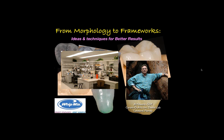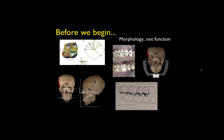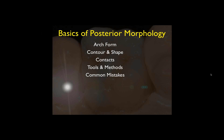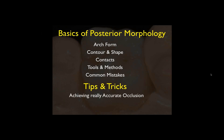Before I get going, I'd like to mention that we're talking about morphology, not necessarily function. While these are inevitably intertwined, today we're going to focus only on what I believe to be the most important concepts of posterior morphology and how to approach doing it from where I see it. We're going to look at the basics of posterior morphology, arch form, contour and shape, contacts, tools and methods, common mistakes, and then some tips and tricks — hopefully achieving really accurate occlusion, warp-free bridges, and a few other things.